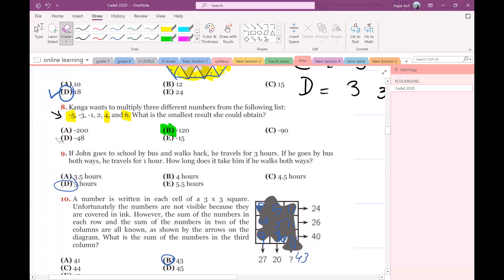For question number 9, let's have a look. If John goes to school by bus and walks back he travels for 3 hours. If he goes by bus both ways he travels for 1 hour. So the traveling time by bus is 1 hour for both ways, half an hour for one way.